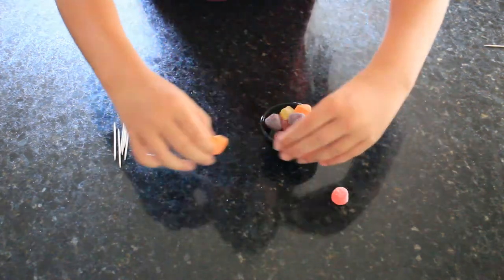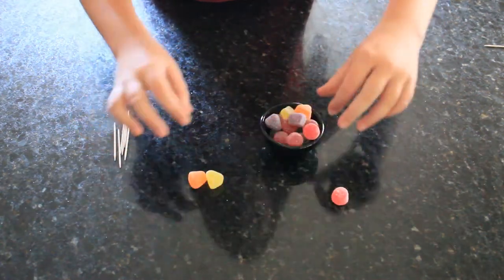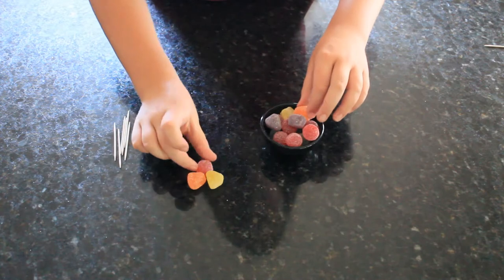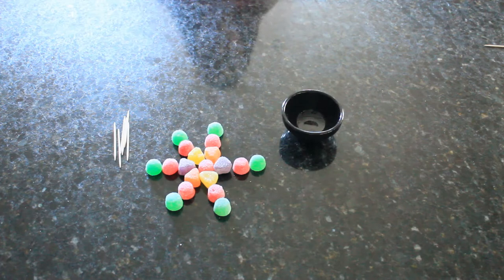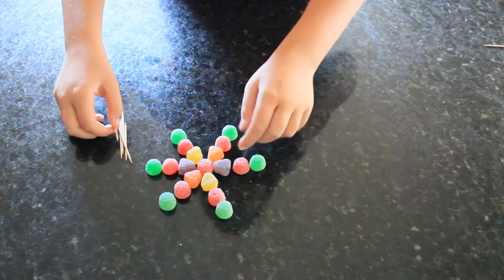Lay out your pattern for your snowflakes so you are happy with it. There will be one centre jube and 6 arms to the snowflake with 3 jubes on each arm. Work on one arm at a time.